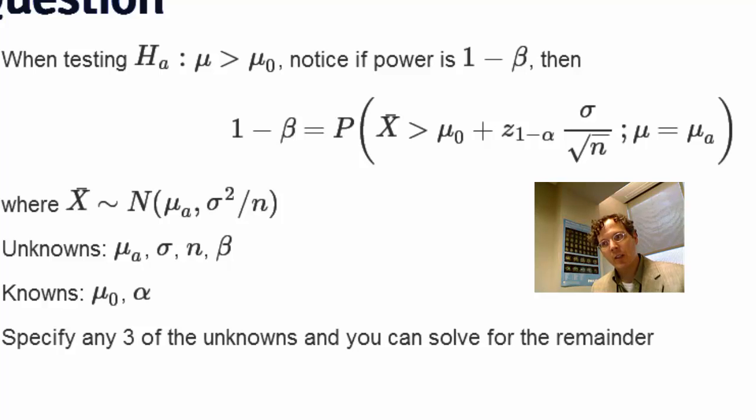And this is how power calculations usually work. You are particularly concerned most of the time with either n or beta. You usually either want to figure out, for a particular power that I want, what n would I like to have or should I have, or I can only conduct a study of this size, of size n, what is my power for doing that? Should I even waste my time? So those are the two most common ways, but of course you could also solve for mu a or sigma.